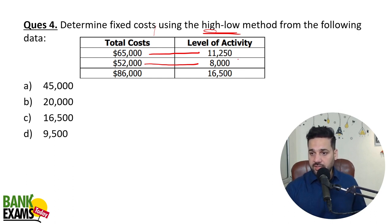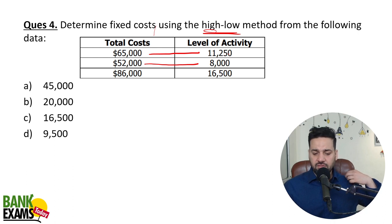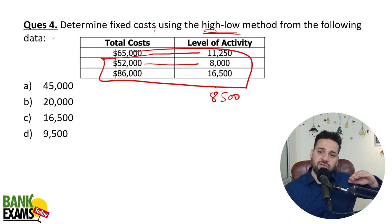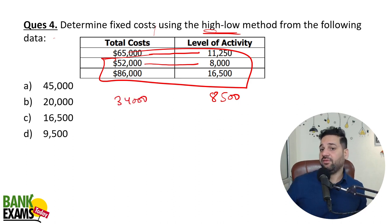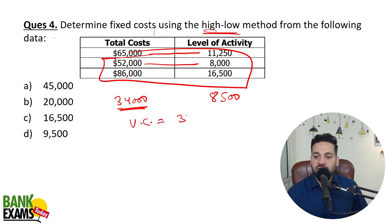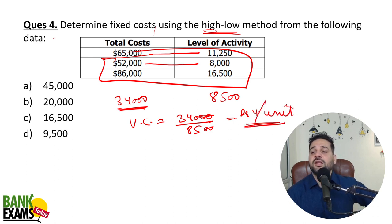We need to calculate the fixed cost. Using the two extreme activity levels — 8,000 and 16,500 — you get your answer. Rupees 4 per unit is your variable cost.